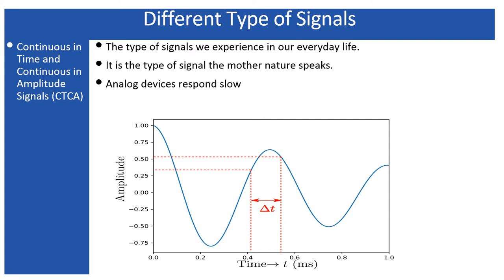By definition, for an analog signal there exists an infinite number of data points between two successive data points. More precisely, within any arbitrary time interval, the number of amplitude points between two successive points is infinite with any arbitrary precision. That means no matter how many times you zoom into a section, you will never find two points in amplitude having no other points between them — there will always be an infinite set of data points between any two.